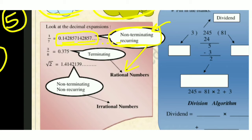For 3/8, the decimal expansion is 0.375. There are no dots after it, meaning the division process ends. So this is a terminating decimal expansion. When a number has a terminating decimal expansion, it is a rational number.